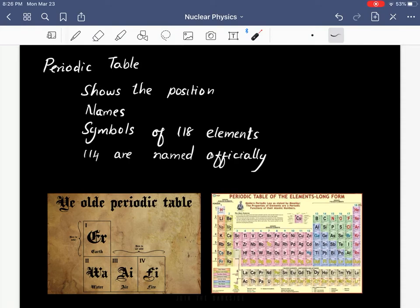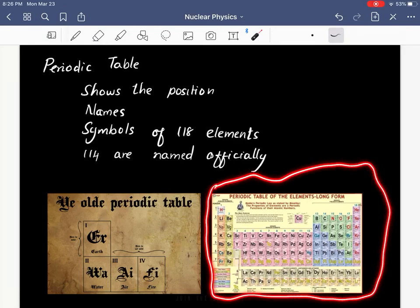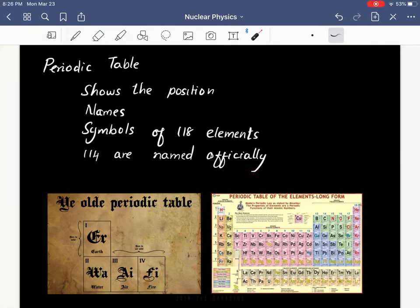periodic table we are following currently, called the modern periodic table, which has all 118 elements in it.